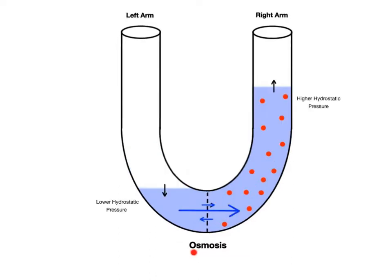So as osmosis begins, water molecules move in both directions across the membrane. But the overall net movement of water will be from the left arm with zero percent NaCl into the right arm with 10 percent NaCl, following its concentration gradient. Remember, the solutes are restricted to the right arm. They can't move across the membrane. So the water level in the left arm begins to drop, while the water level in the right arm begins to rise.